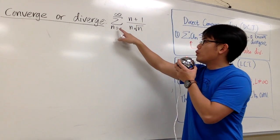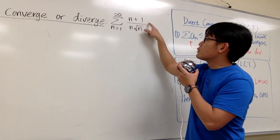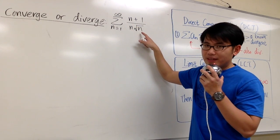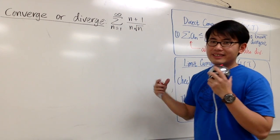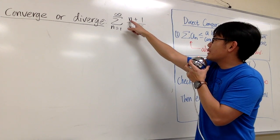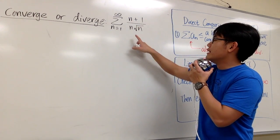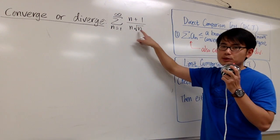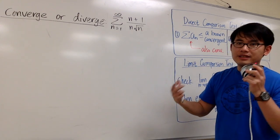So does this series, sigma when n goes from 1 to infinity, n plus 1 over n times square of n, converge or diverge? Well, I expect that we have two things on the top, n plus 1, and then we have only one thing, n times square of n on the bottom. Why don't we split the fractions apart?